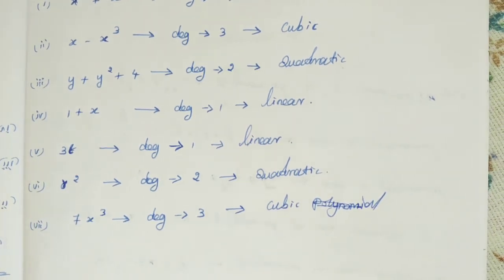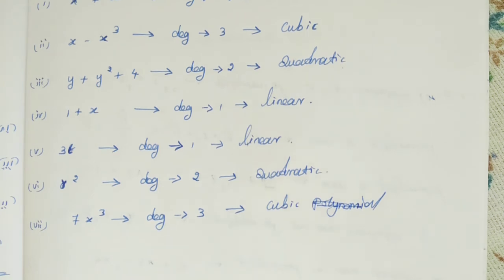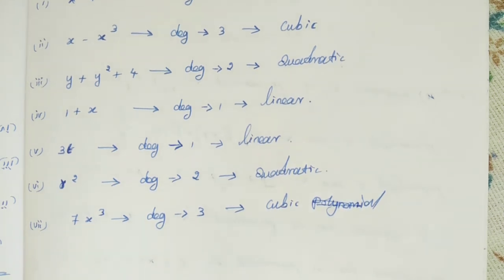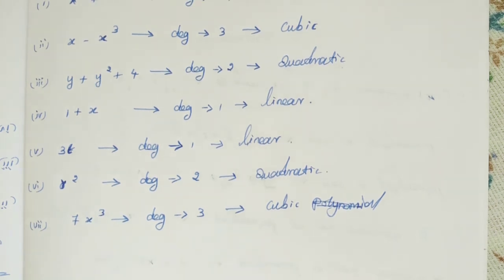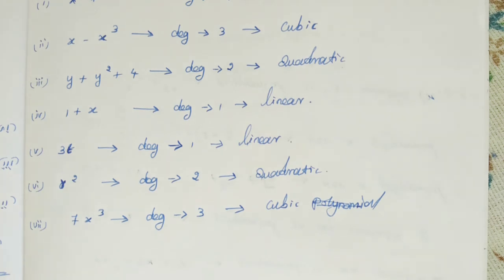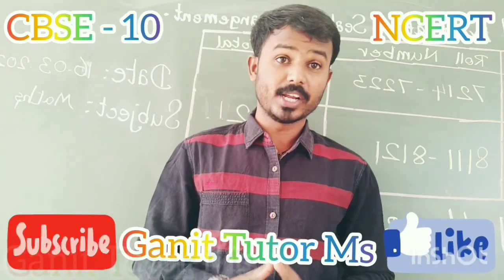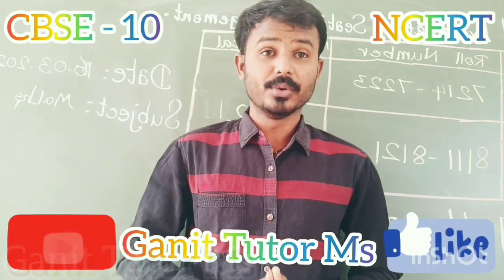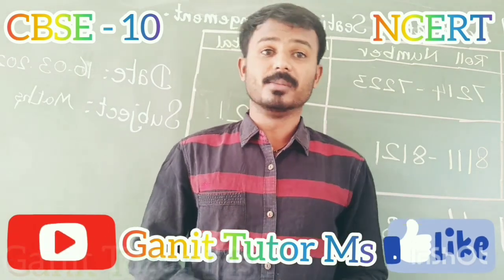While you are checking for the quadratic or cubic or linear, we should not bother about the terms. You do not need to focus on the terms. Only we can focus the degree, that is the power of the variable, the degree of the polynomial. I hope in this video you may clear about the problem. Thank you for watching my video. If it is any doubt, you can ask me in a comment. Thank you.